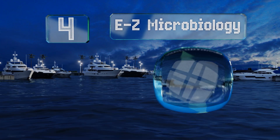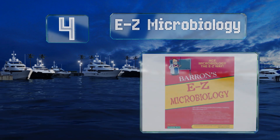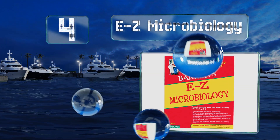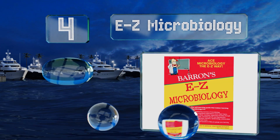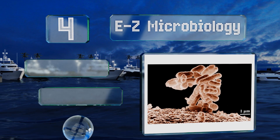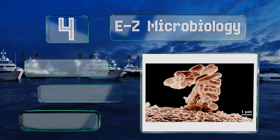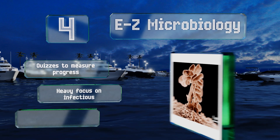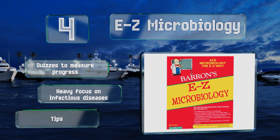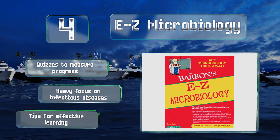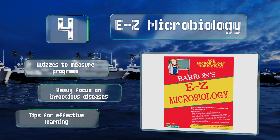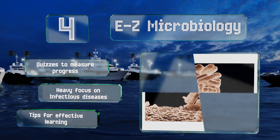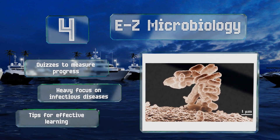At number 4: if you steered clear of scary AP classes in high school and now it's coming back to haunt you, Easy Microbiology is here to help. It covers everything from how to use a microscope to epidemiology, with simple prose that won't leave you scratching your head. It includes quizzes to measure your progress, a heavy focus on infectious diseases, and tips for effective learning.